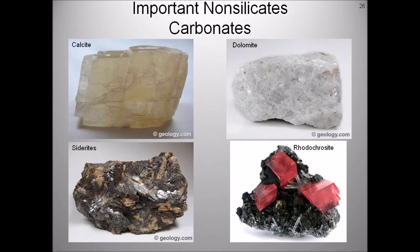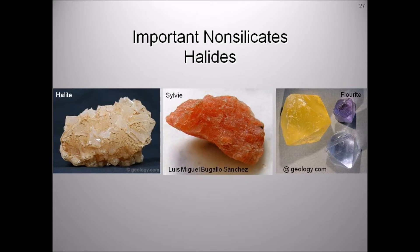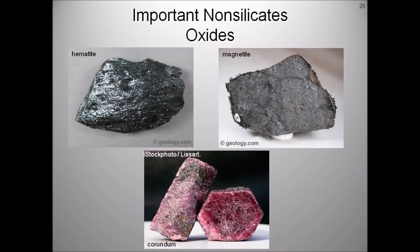Halide minerals are any of a group of naturally occurring inorganic compounds that are salts of the halogen acids, for example hydrochloric acid. The most common halides are halite or rock salt, sylvite, and fluorite. The oxide mineral class includes those minerals in which the oxide anion is bonded to one or more metal ions. Three common oxide minerals are hematite, magnetite, and corundum.